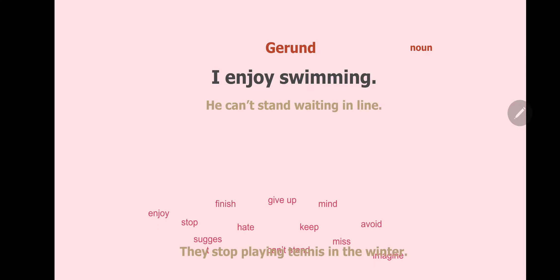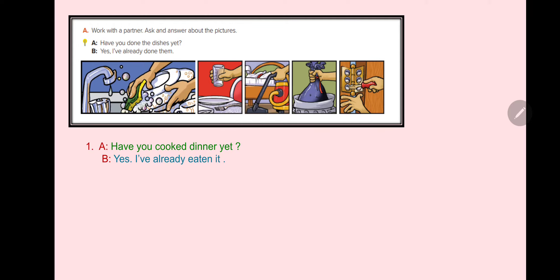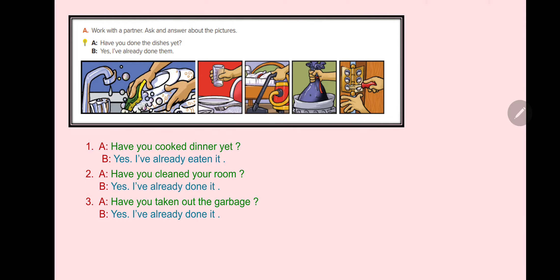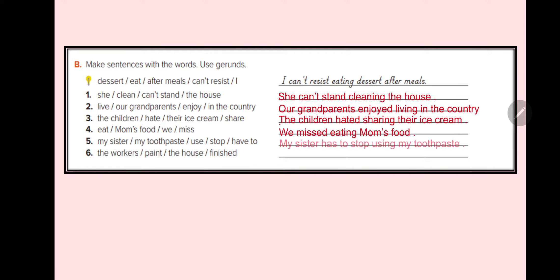He cannot stand waiting. They stop playing tennis in winter. Make sentences with gerund: I cannot resist eating. She cannot stand cleaning the house. Our grandparents enjoyed living in the country. The children hated sharing their ice cream. My sister has to stop using my toothpaste. The workers have finished painting the house.